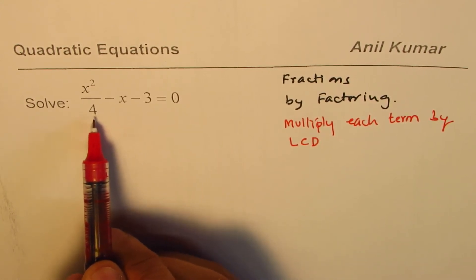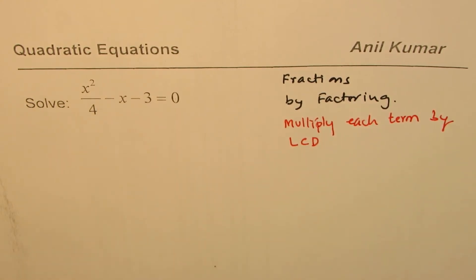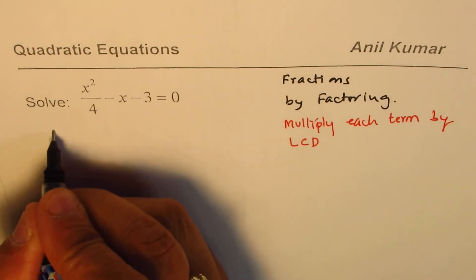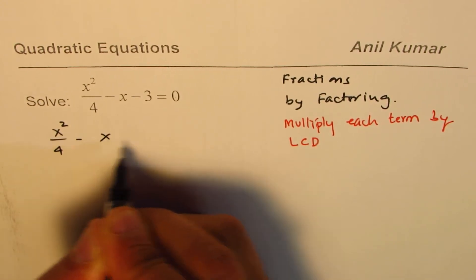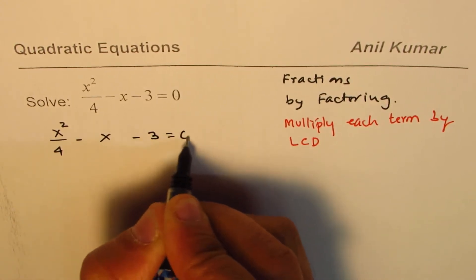Here the only number in the denominator is 4 so we can multiply each term by 4. So what we get here is we have this equation x squared divided by 4 minus x minus 3 equals to 0.